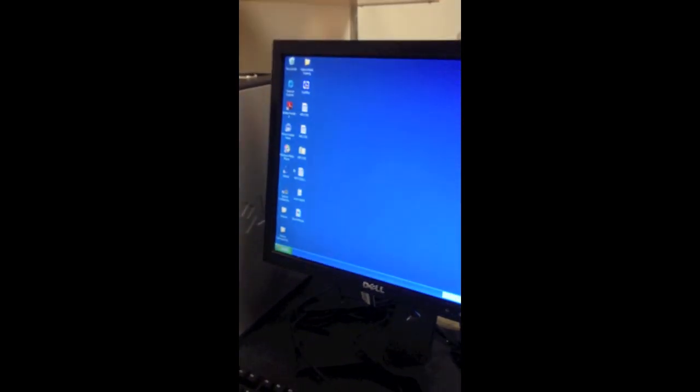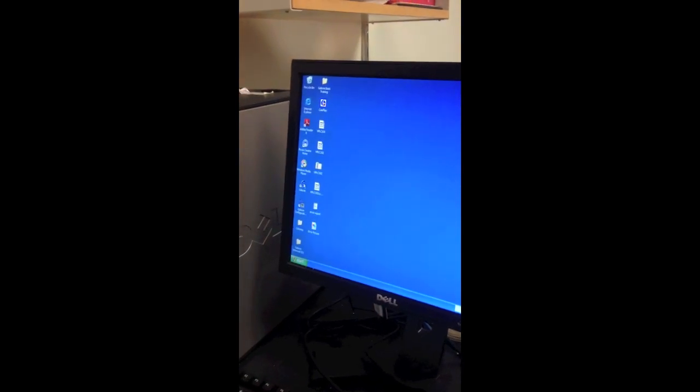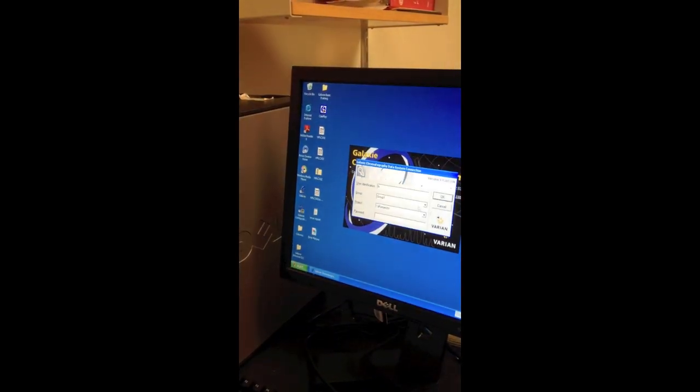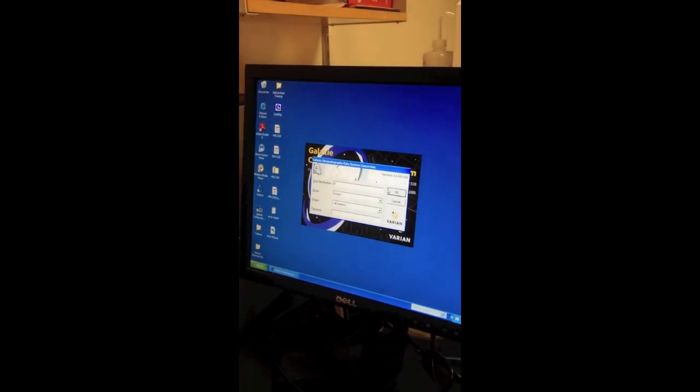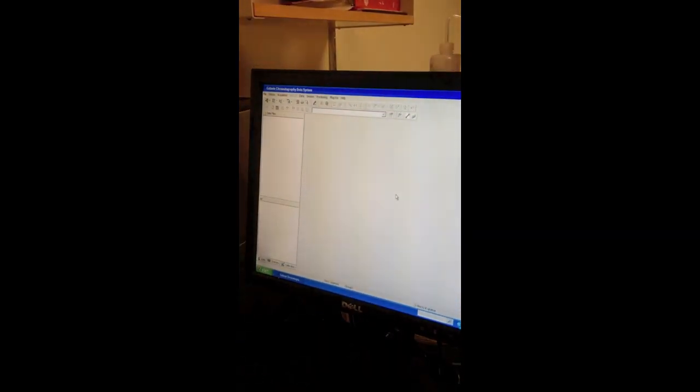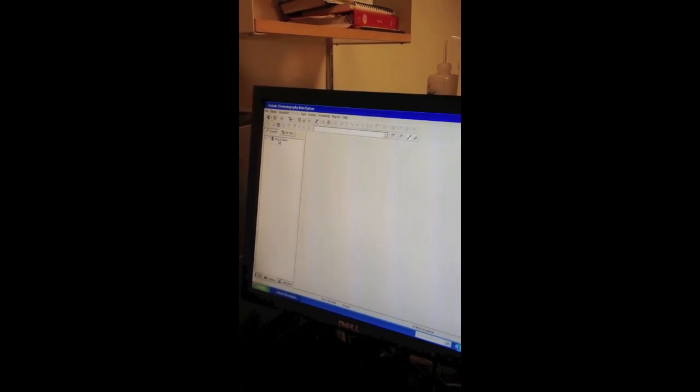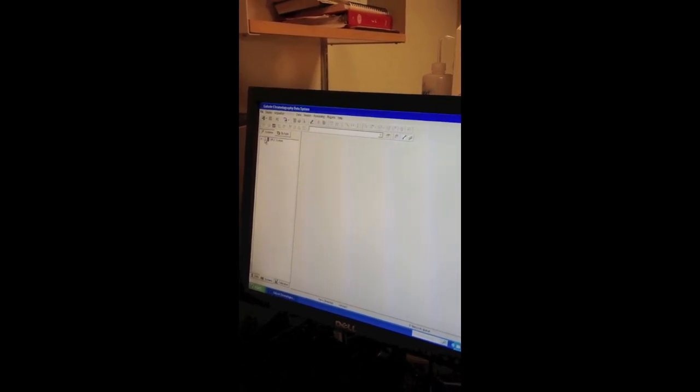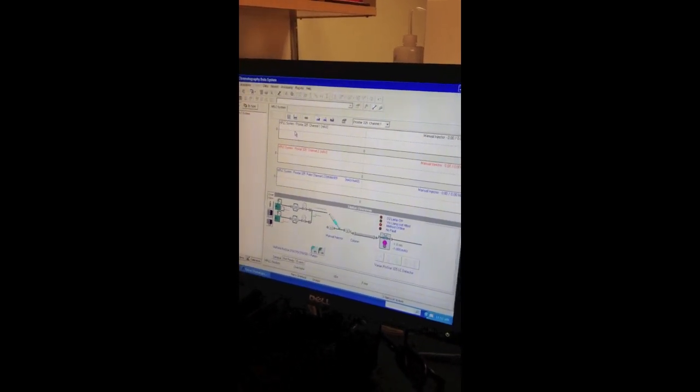So now going over to the computer and turning on the program. Click on the galaxy icon. Click OK, there's no password needed. Down here you'll see data, systems, calibration. Click the systems tab. Then it will have HPLC system with an empty box next to it. Check that. So now here are the graphs. Channel 1 and channel 2 just indicating the different wavelengths. Here are the pumps.